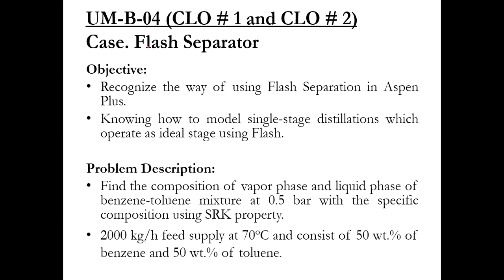There are two objectives of this simulation. Number one is to recognize the way of using flash separation in S1 Plus, and number two is knowing how to model single stage distillation which operates as an ideal stage using flash. This flash separator basically represents a single stage of a distillation column, which I will discuss in detail when we start distillation in S1 Plus. This activity is related to CLO number one and CLO number two — choosing the property package and components relates to the fundamentals, and simulating the equipment relates to CLO number two.